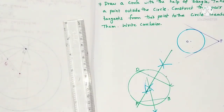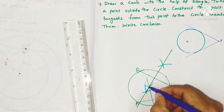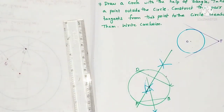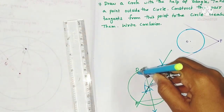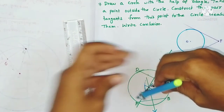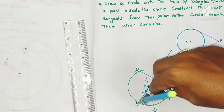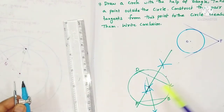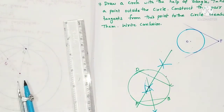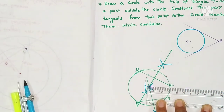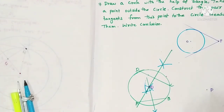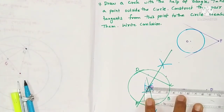Now if you observe, these two perpendicular bisectors intersect at one particular point — that point is the center of the circle. If you want to check this is the center, all sides are equal. So this is the center of the circle, and we label it O.